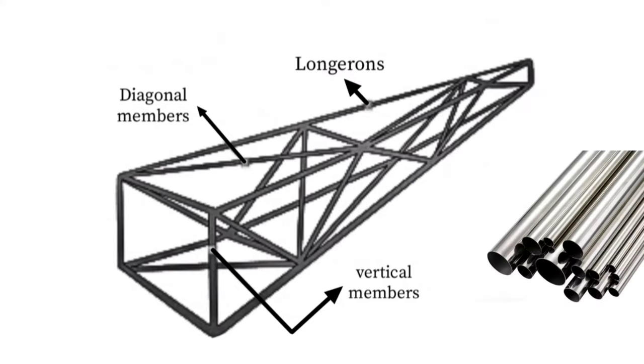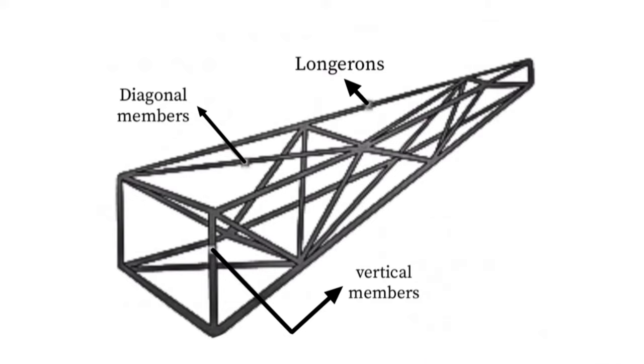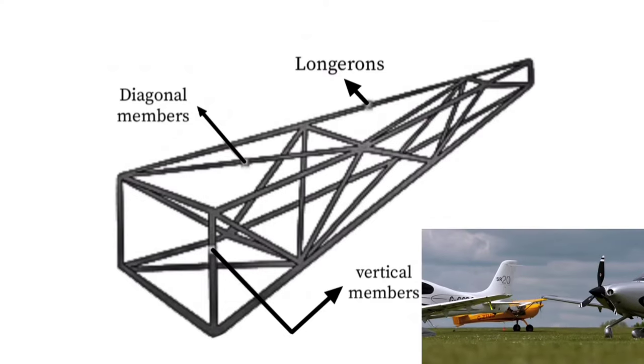Here, steel tubes are welded together as members and are generally covered with fabric. This type of fuselage is mostly used in small aircrafts.